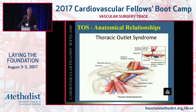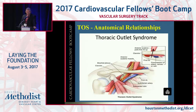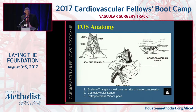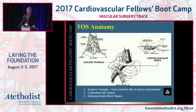We only have 15 minutes, so we don't have time to go over everything in detail, but this is really an hour lecture talking about anterior scalene, subclavius muscle, and the pec minor. Here's some more anatomy in terms of the scalene triangle, which is the most common site for nerve compression, the costal-clavicular space, and the retropectoralis minor space.